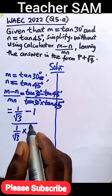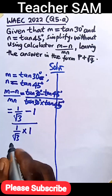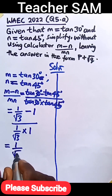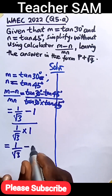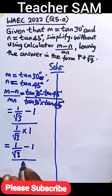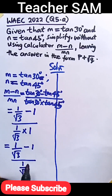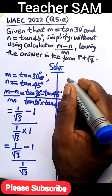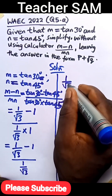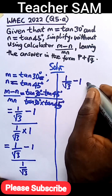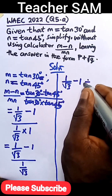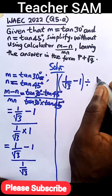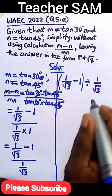So let me rewrite that. That would be 1 over root 3 minus 1, all over 1 over root 3. Because 1 over root 3 times 1 is the same thing. This is the same as having 1 over root 3 minus 1, divided by 1 over root 3.